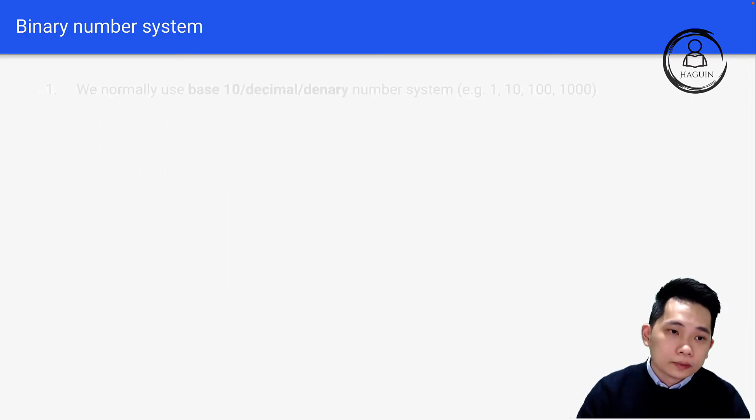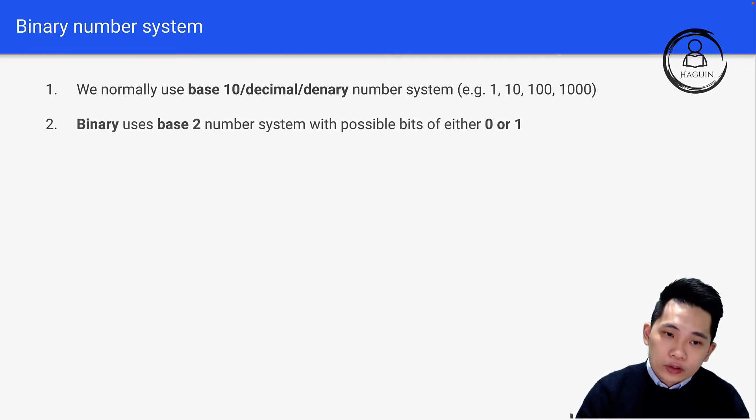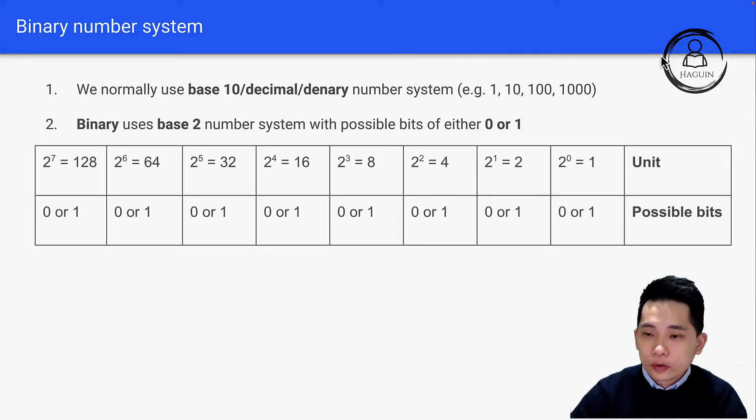Let's look into binary number system. We normally use base 10 or decimal denary number system. But binary uses base 2 number system with possible bits of either 0 or 1. Looking from right to left, we start with 2 to the power of 0, which is 1, then 2 to the power of 1, which is 2, then 4, 8, 16, 32, 64, up to 128. Each bit can only be represented as 0 or 1. If it's 0, it doesn't exist, and if it's 1, it's present.